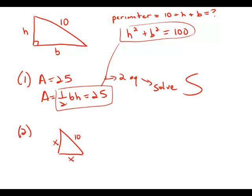Let's call them both x. Well, then we know that x² plus x² equals 100. 2x² equals 100. x² equals 50. So we could find x from that.